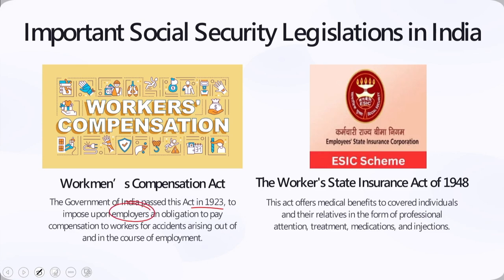The government of India passed the Workman's Compensation Act in 1923 to impose upon employers an obligation to pay compensation to workers for accidents arising out of and in the course of employment. Workers who operate specifically in industries such as mining, crops, manually powered equipment, railroads, ships, building sites, and other dangerous activities listed in Appendix 2 of the statute are covered under this act.